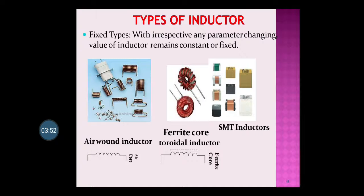Here you can see different types of inductors available in the market. In types of inductors, there are two main categories. First is fixed type — inductors whose value does not change. If the value is 10 milli Henry, it will always remain 10 milli Henry; you cannot change it. In fixed type, there are two sub-types: air wound inductors and toroidal inductors. The round ones are called toroidal inductors, and their symbols are shown here.